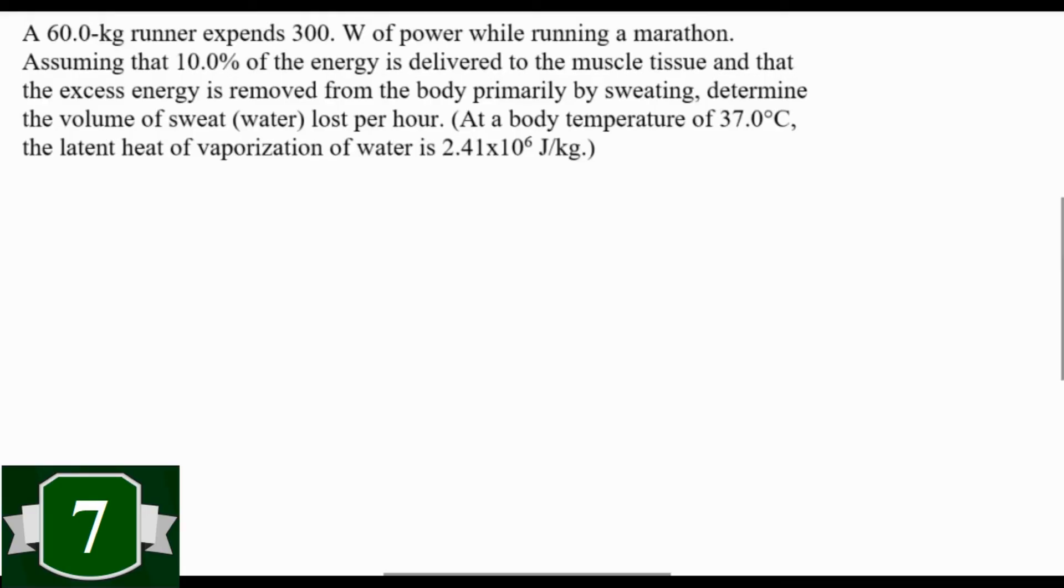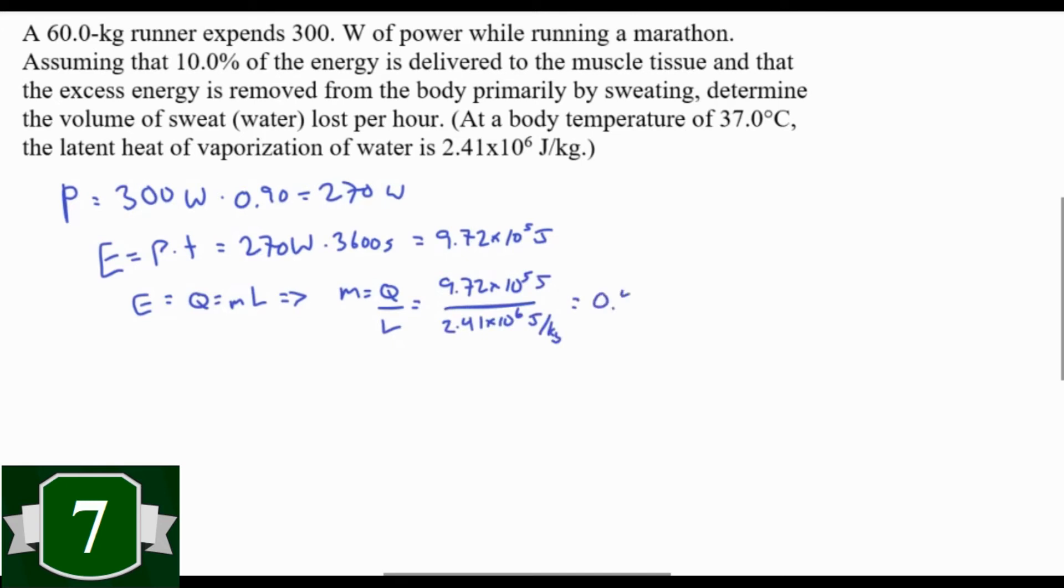If a 60 kilogram runner expends 300 watts of power while running a marathon, about 90 percent of that energy is wasted and gets wicked away as sweat. This is what allows humans to run for so long compared to animals that depend on panting. So anyway, how much sweat would that be? Well, 90 percent of 300 watts is 270 watts, and that energy for an hour is going to be 270 watts times 3600 seconds, 9.72 times 10 to the 5 joules. All of that is going to go into vaporizing this water, and so if Q equals mL, m is Q over L. L is given in the problem. Plug in your numbers, you get 0.403 kilograms. That's per hour. And your average marathoner takes four to five hours, which is definitely why they need to take some drinks along the way.